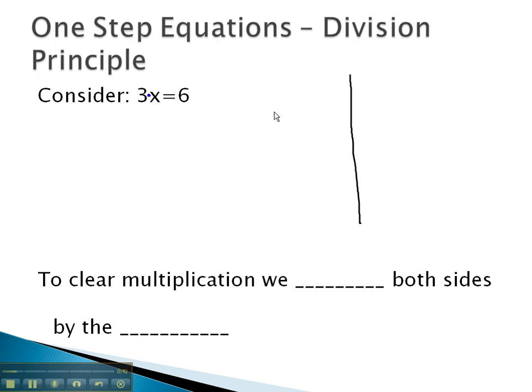Because we have 3 x's represented, we'll show them here 1, 2, 3 x's, equal to or balancing with 6 positives. 1, 2, 3, 4, 5, 6 positives, okay?